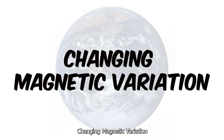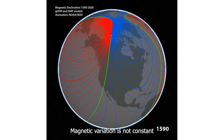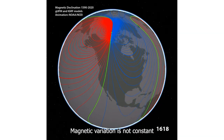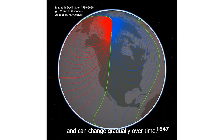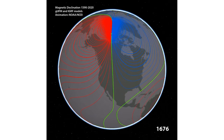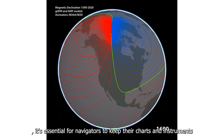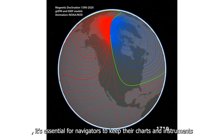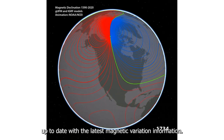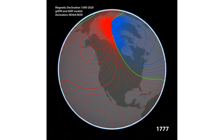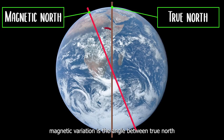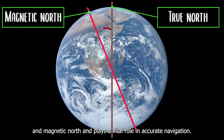Magnetic variation is not constant and can change gradually over time. Because of this, it is essential for navigators to keep their charts and instruments up to date with the latest magnetic variation information.